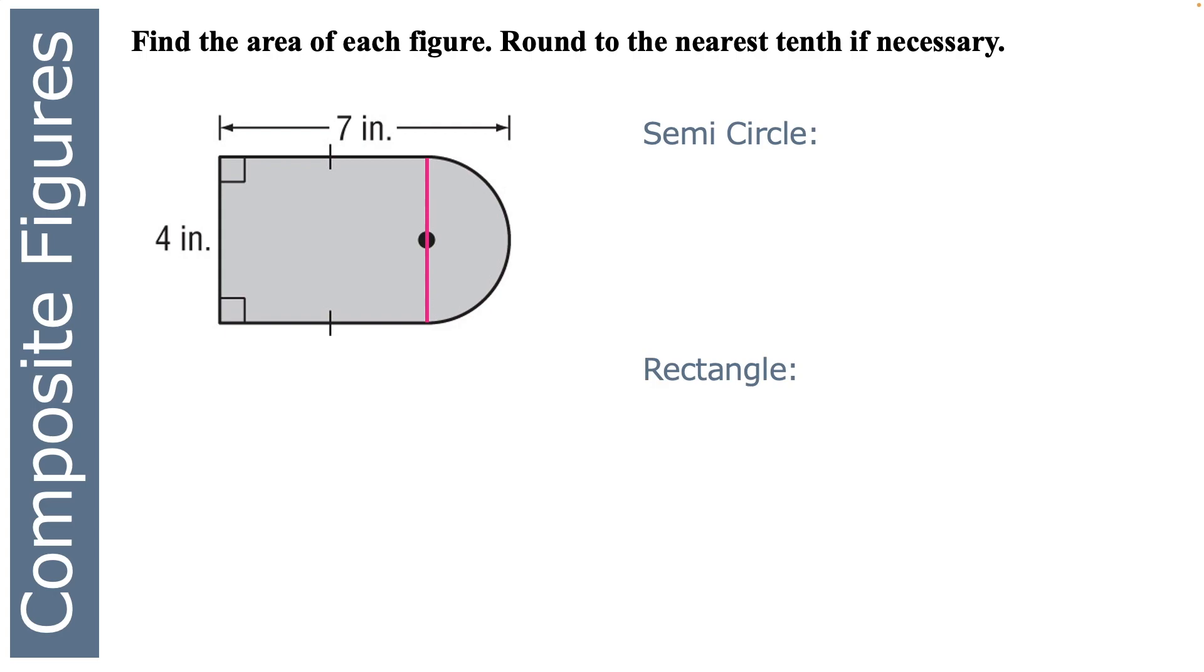The area of a semicircle I know is πr² divided by 2. So the area of an entire circle is πr², and if I divide it by 2, I get the area of the semicircle. And the area of the rectangle is base times height. So let's find the area of the semicircle first. In order to find the area of the semicircle, I need to know the radius of it.